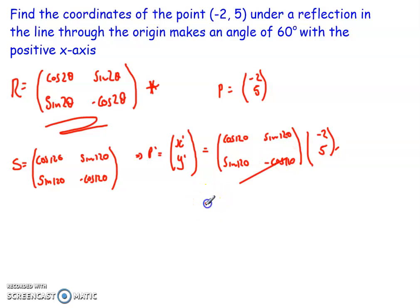What that then means I get is I get -2 cos 120 plus 5 times sine 120, then I've got -2 sine 120 minus 5 cos 120.